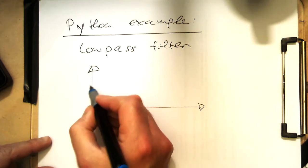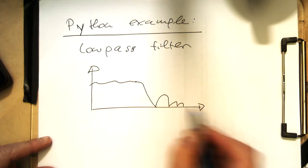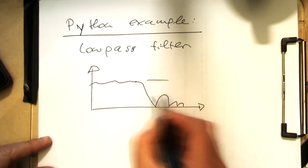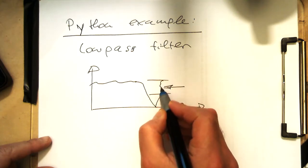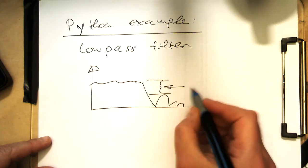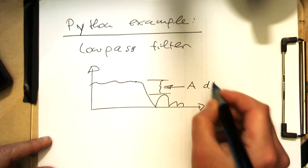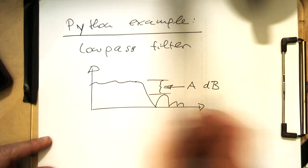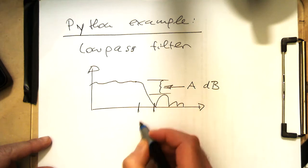So low pass filter, remember, so we have something like that. And then this is here defined, so this distance here, this is down at least A dB here. And then we've got our transition width here.